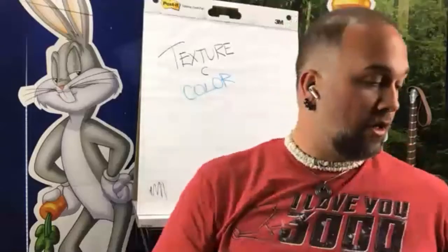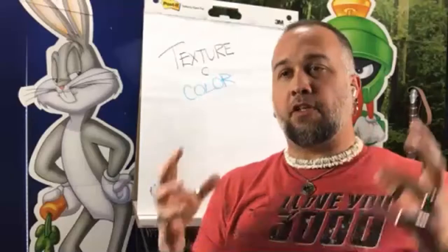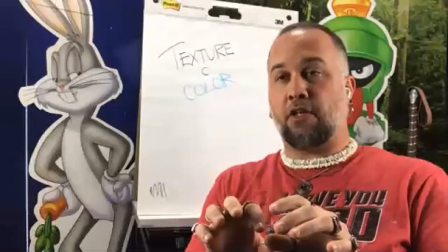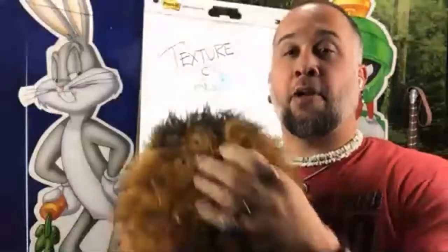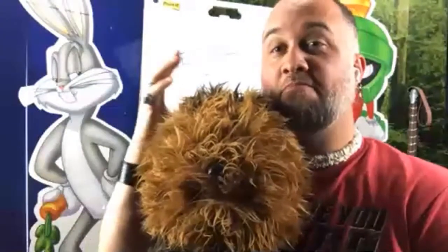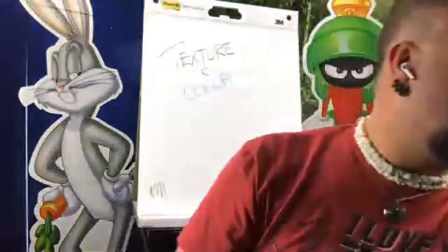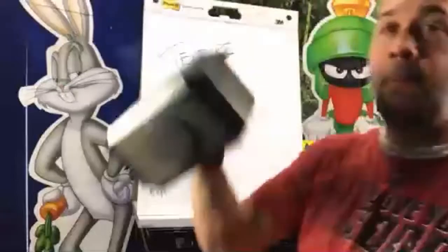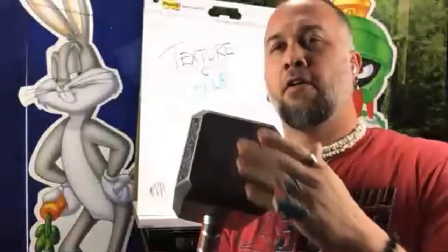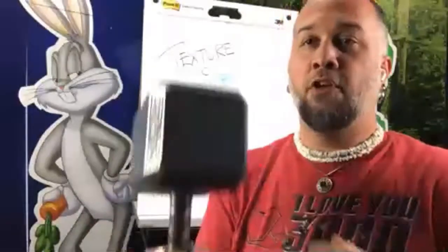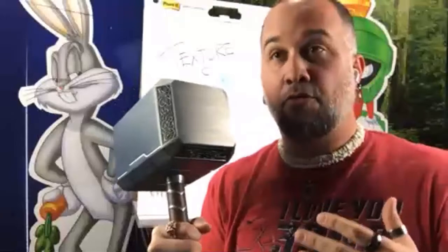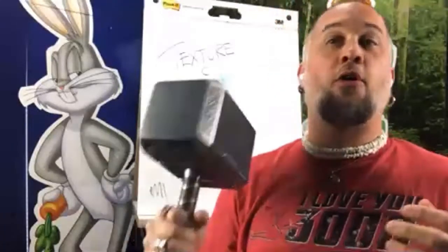Let's get into texture. Here's my friend Chewy — baby Chewy is furry, right? Fur is a texture. I also have Mjolnir, Thor's hammer. Mjolnir is smooth — it's a smooth texture, not rough at all. Very smooth, and it's hard. So we've got smooth and we've got furry. Go ahead and type some texture words into the message.